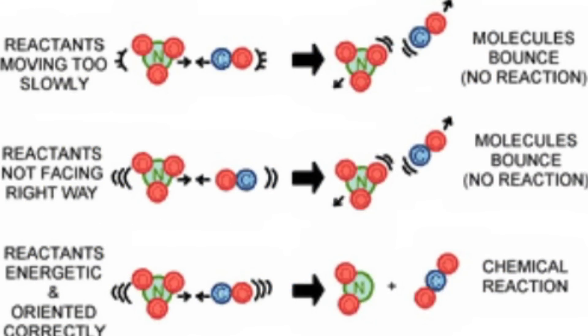In our first example, you have two reactive particles coming together. They're moving too slowly, so they don't have enough energy to react — they simply bounce off and do not react. In our second example, the same two particles are coming together; they may have enough energy, but they are oriented differently and not correctly, so they bounce off and do not react. In our final example, our two reactive particles come together with both proper energy and proper orientation, and on the product side we have a new substance.